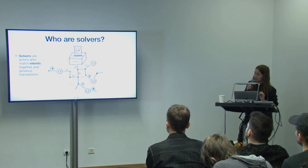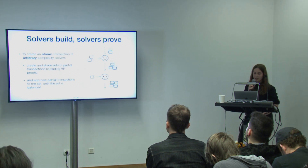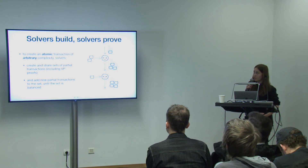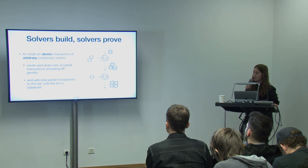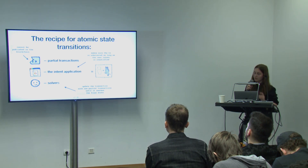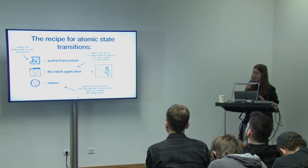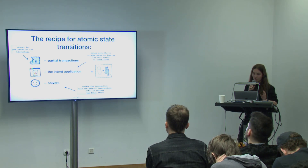The last component is solvers. Solvers are the actors who make everything possible — they build transactions, receive intents, and match them together. To create an atomic transaction of arbitrary complexity, solvers receive partial transactions and partial transaction sets, combine them together, and update these sets until it's all balanced. Once balanced, they publish it. To summarize: partial transactions cannot be published on the blockchain; intent application makes sure transactions are partial as long as the intent is not satisfied; and solvers try to update the transaction until it's satisfied. Altogether this allows creating atomic state transitions of arbitrary complexity.